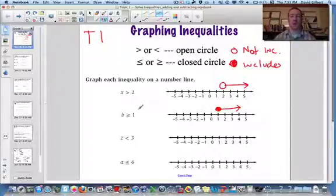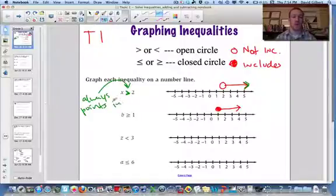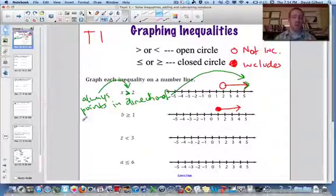All right, now notice that this arrow points this way. And this arrow head points that way. That always happens if the variable's on the left. So the inequality always points in the direction of the arrow, in the direction of the graph of this thing when the variable is on the left.